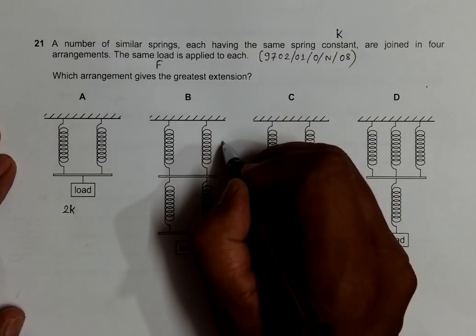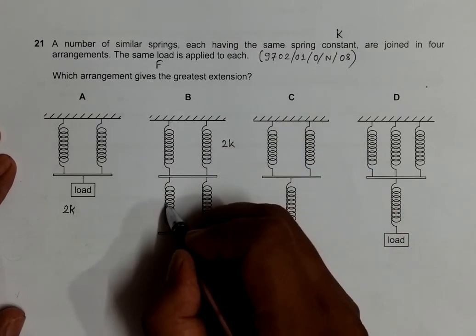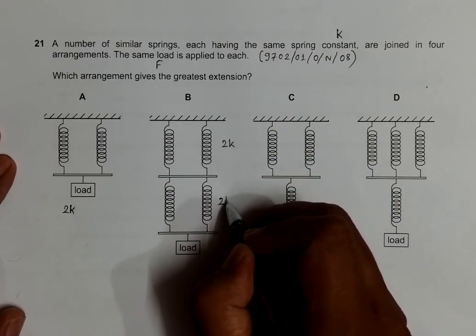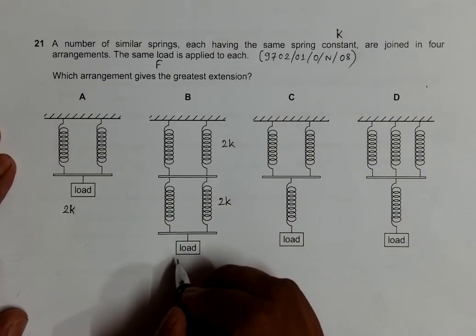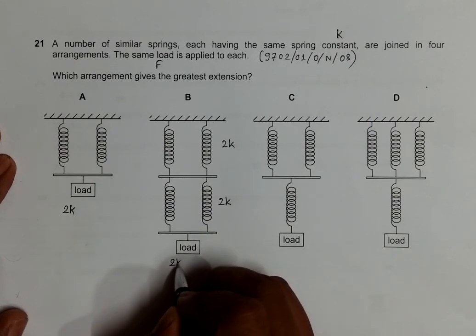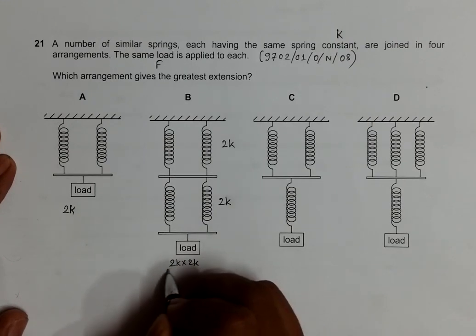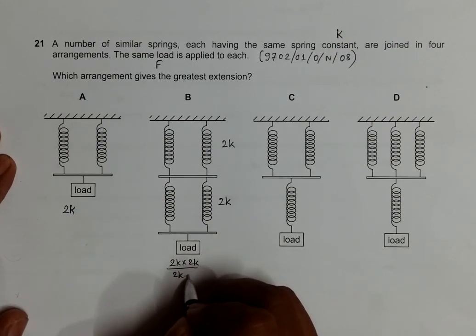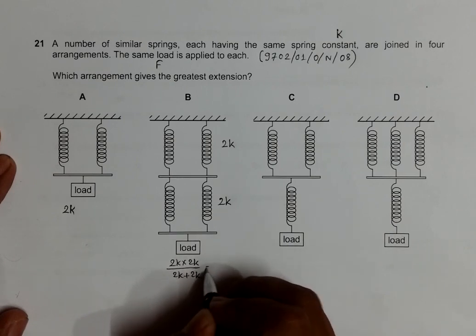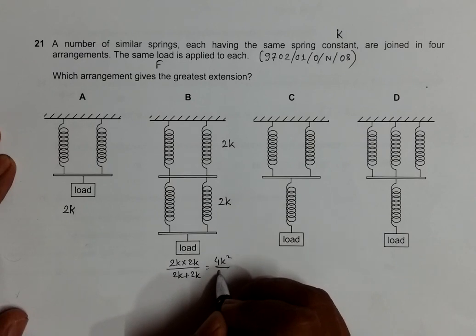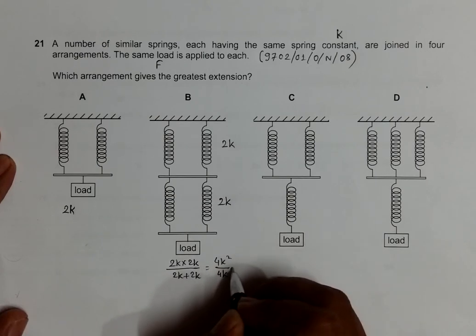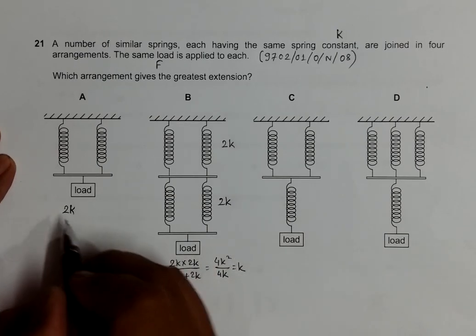For arrangement B, we have K and K which is 2K, and K and K which is also 2K. But this 2K and 2K are in series, so the spring constant will be equal to 2K times 2K divided by 2K plus 2K. That equals 4K squared divided by 4K, which equals simply K. So its spring constant is K.